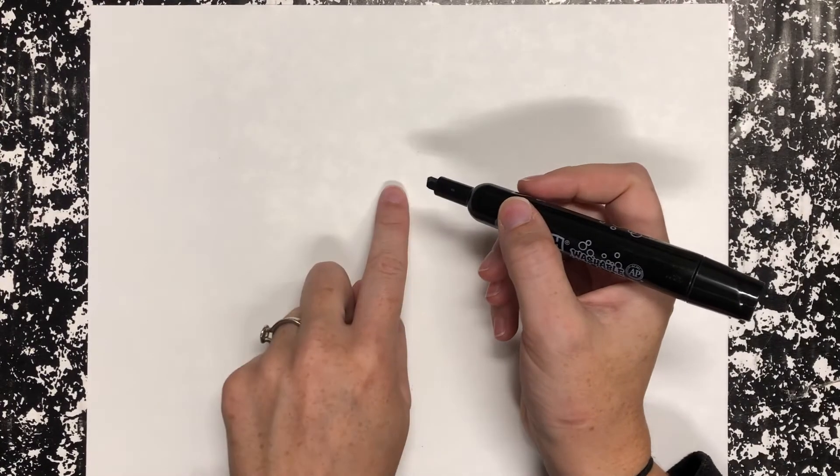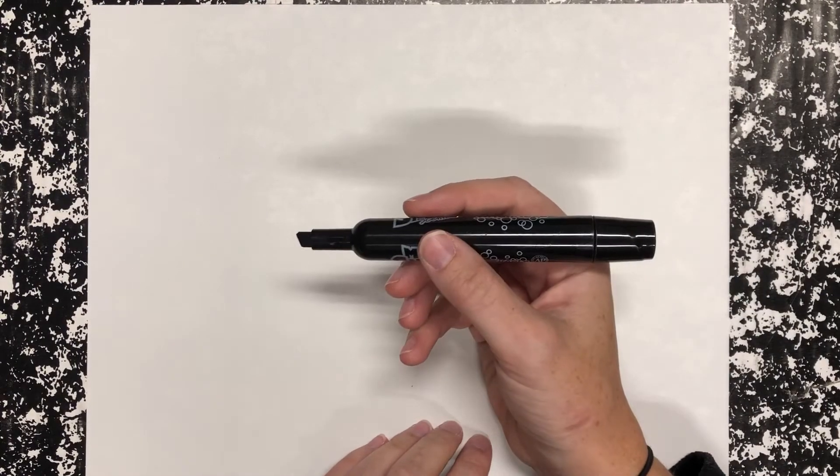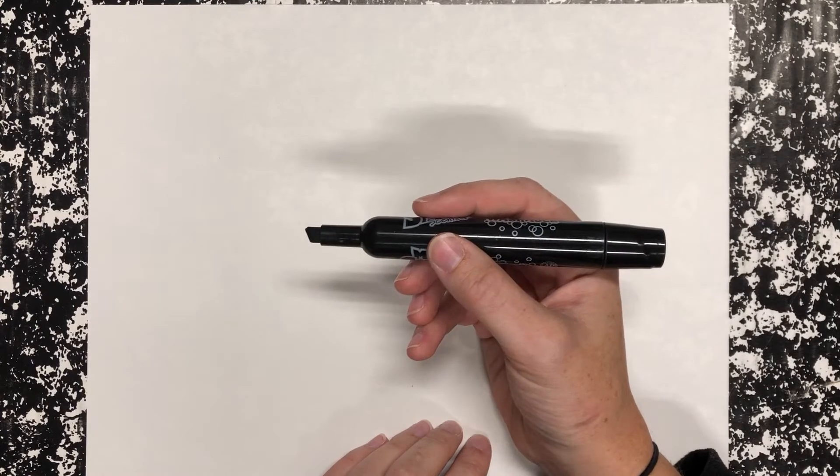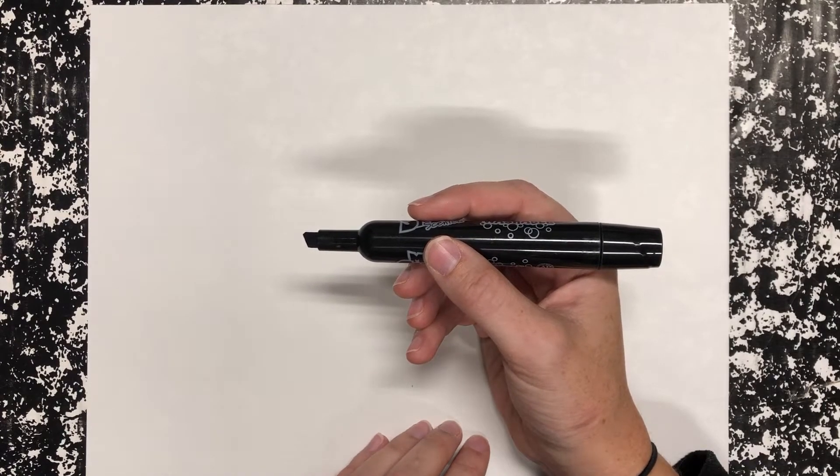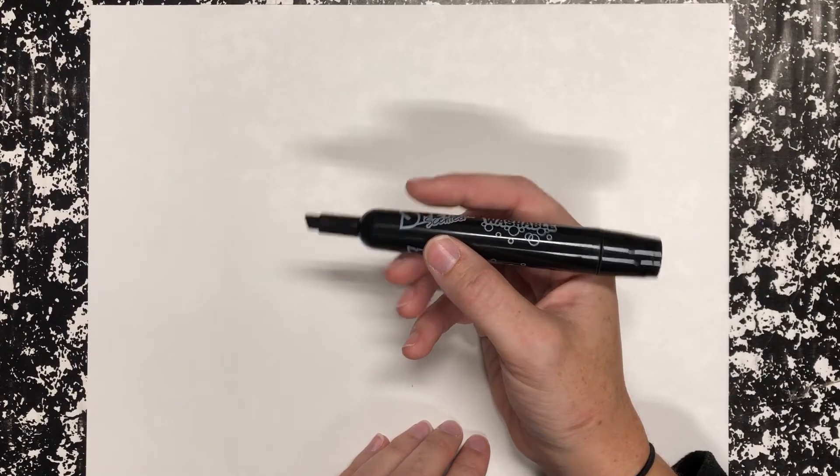You are going to create an oval. I am using a marker, but you should use a pencil just in case you need to erase. I'm using a marker so that you can see better.